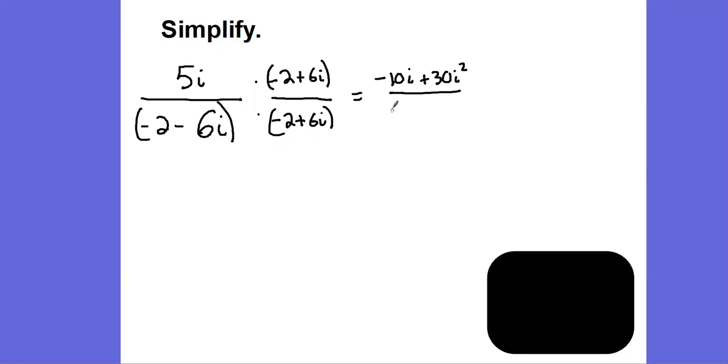Negative 2 times negative 2 would be positive 4. My outers would give me negative 12i. My inners would give me positive 12i. All that stuff is going to cancel out. Negative 6i times positive 6i would be minus 36i squared.